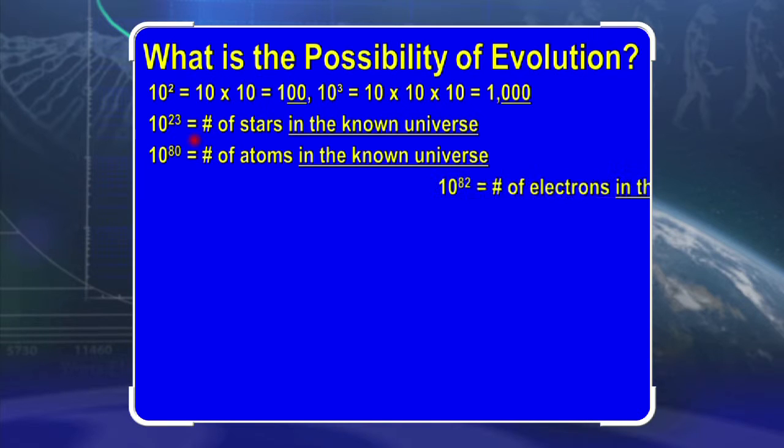Or if we write the number 10 with the number 82 above it—a 1 followed by 82 zeros—that is the number of electrons in the known universe. Again, not all the electrons, just the ones we know about.